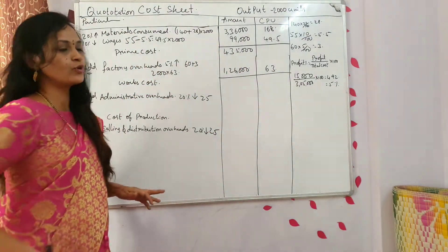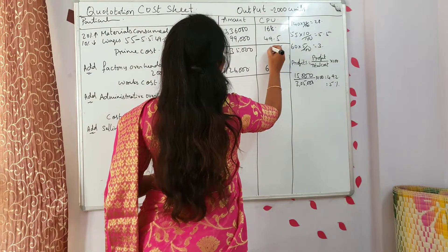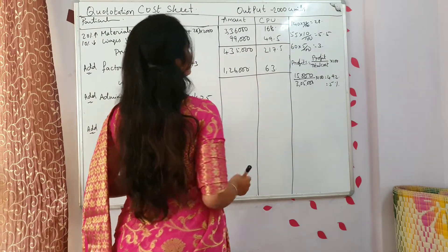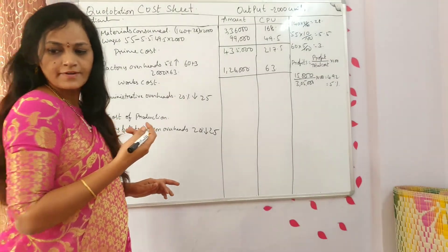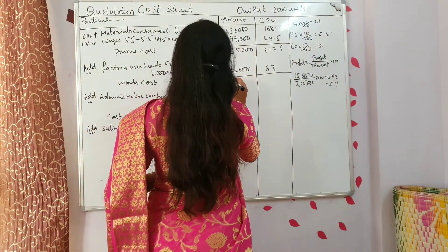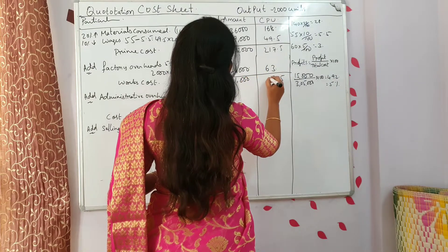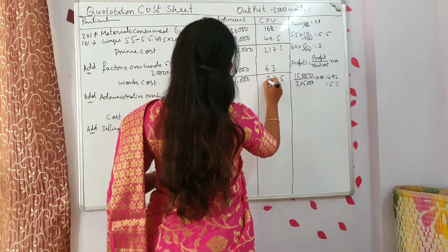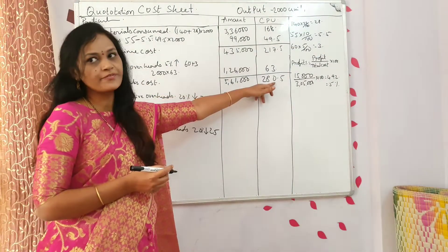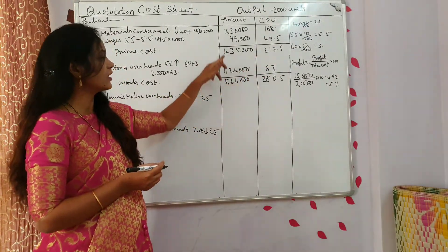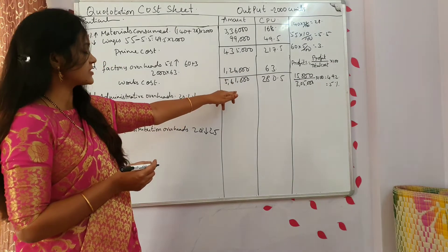1,26,000 plus 4,35,000 — you get 5,61,000. Works cost is 280.5 per unit and the total amount is 5,61,000.